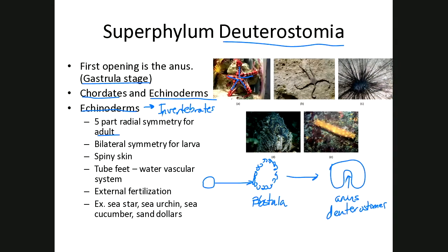Echinoderms actually go through a larva stage, so they have metamorphosis from larva to adult, and their larva actually has bilateral symmetry. The name of their phylum actually means 'spiny skin,' and you can see from the sea urchin that's definitely a good visual of that. Another feature of echinoderms is what we call tube feet, which can serve as suction cups to either move or grab food. These work by an internal water vascular system working with muscles to move the tube feet.